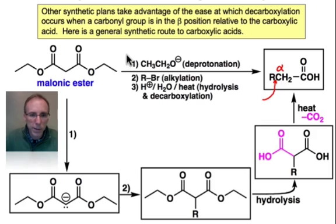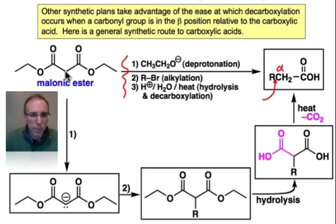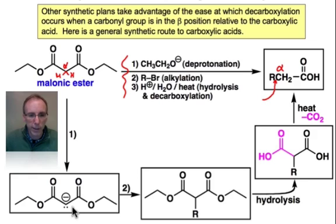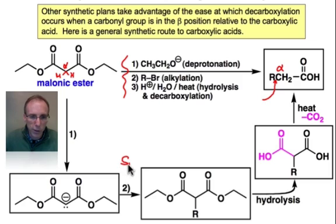The synthesis is achieved by a sequence of three steps that begins by deprotonating the α-position of the malonic ester. The α-position has hydrogens that are quite acidic, and so deprotonation with ethoxide generates the ester enolate shown here. The next step is an alkylation step where some alkyl halide is involved in an SN2-type substitution to attach the R group to the α-position.